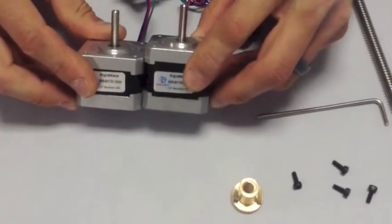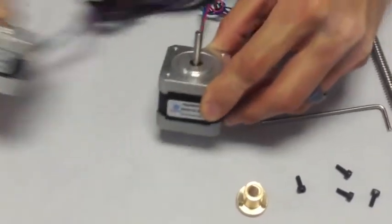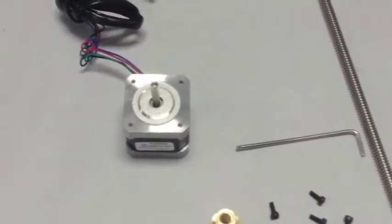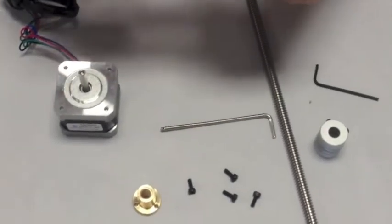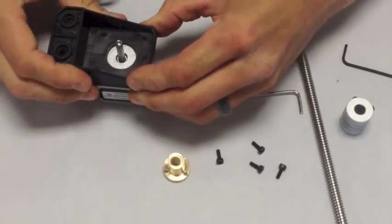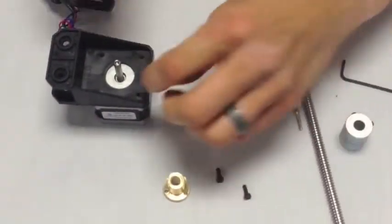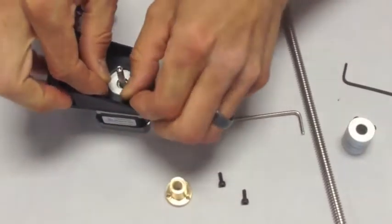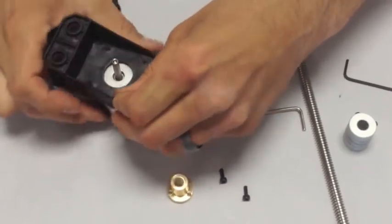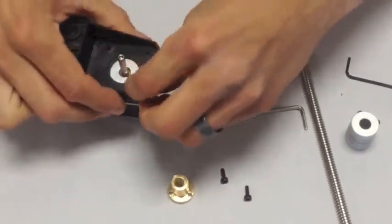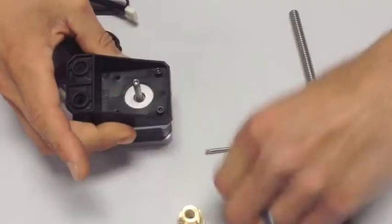You'll take the larger of the two motors, or the taller one, and you'll attach it to the mounting bracket using the four screws, 1033s. You'll also want to make sure that the wiring is facing the back.